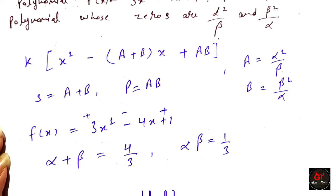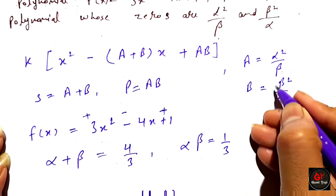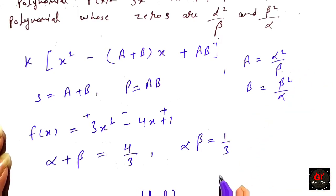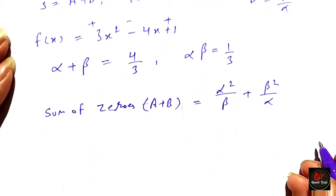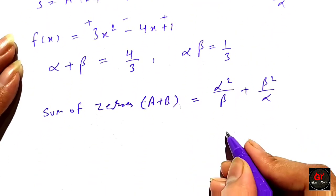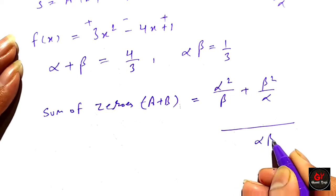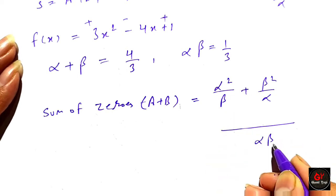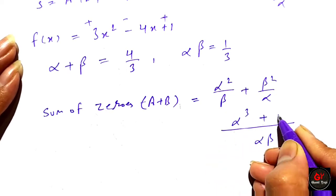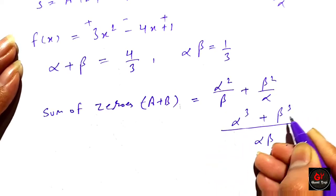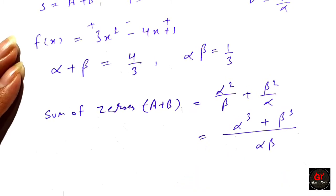Now we find a plus v, which is alpha squared over beta plus beta squared over alpha. Taking the common denominator alpha beta, the numerator becomes alpha cubed plus beta cubed.